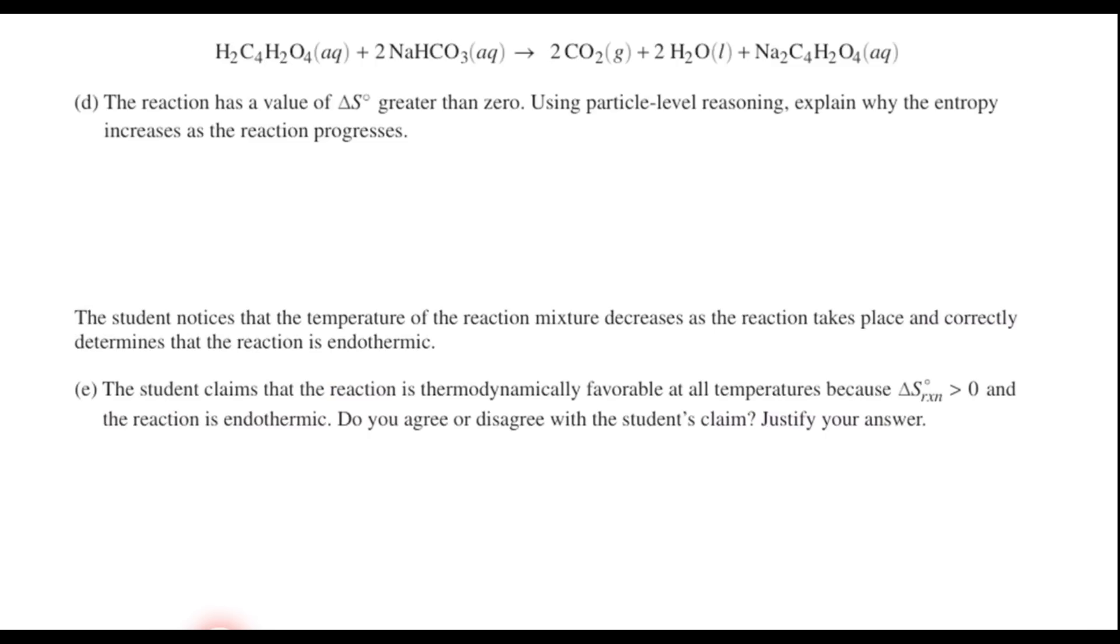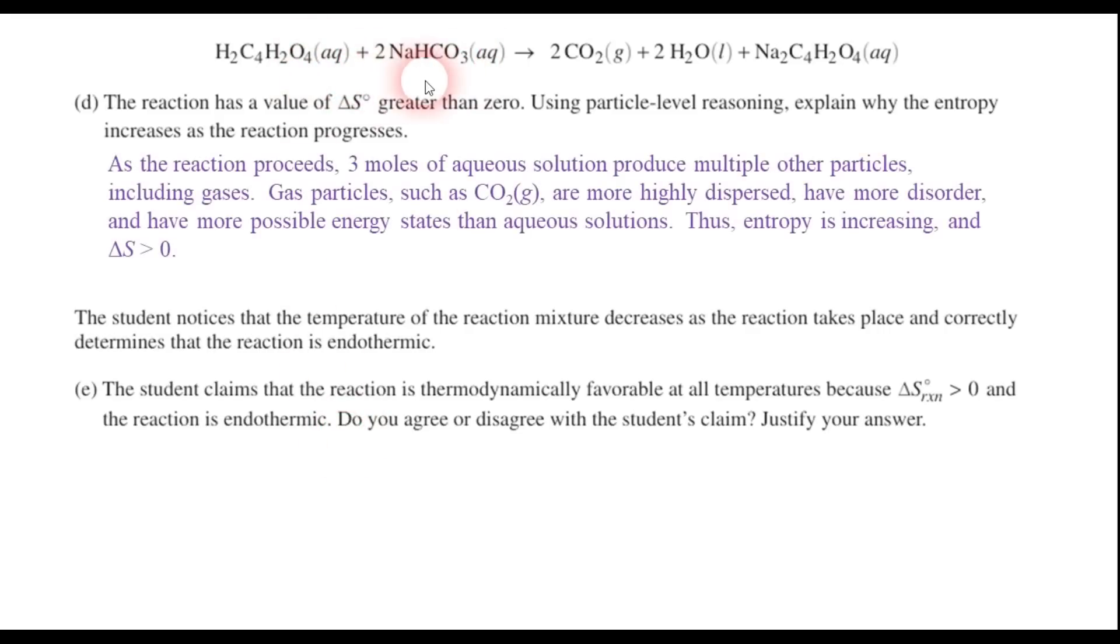Now, let's move on to part D. We have this same reaction. And it says that the reaction has a value of delta S, or change of entropy, greater than 0. Using particle level reasoning, explain why the entropy increases as the reaction progresses. And essentially, if we think about this in terms of particles, we have aqueous solutions starting out here. We have several particles of that. But notice what it turns into. We have even more particles produced at the end. And two of those particles are gases. And we know that in the hierarchy of entropy, gases are about as high an entropy as you can get, can't they? Gas particles are really chaotic. They're moving around. They're independent of each other. Gas particles are more highly dispersed. They have more disorder. They have more possible energy states than aqueous solutions that we started with. So this tells us that the entropy in this process is increasing over the course of the reaction. So delta S is definitely greater than 0.